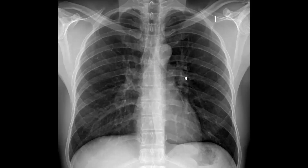The anterior junction line represents four layers of pleura. You have the anterior segment of the left upper lobe on this side and the anterior segment of the right upper lobe on this side. The anterior segments of the lungs kind of extend up to the thoracic inlet, stopping right here anteriorly. This line has four layers of pleura and also some mediastinal fat that comes in anteriorly — that's what you're seeing.